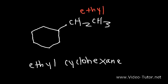Since you only have one substituent, you don't have to say 1-ethylcyclohexane because it's automatically on carbon one. You need at least two substituents to begin putting numbers on it.